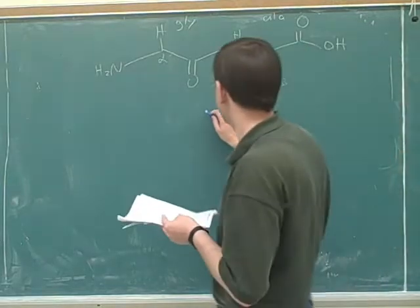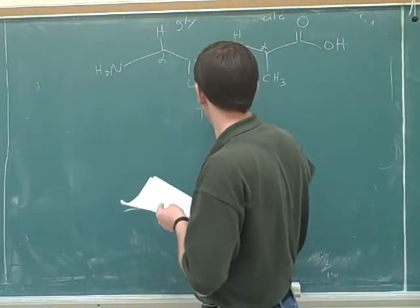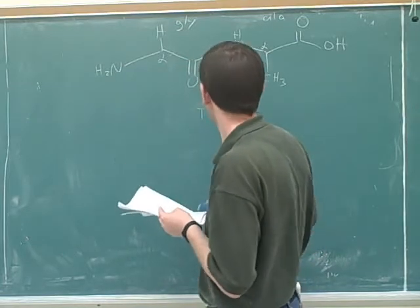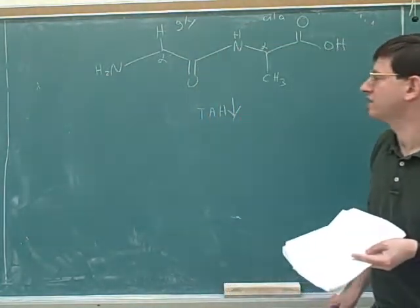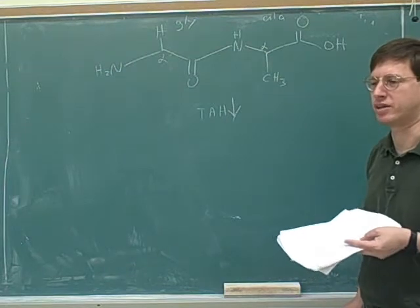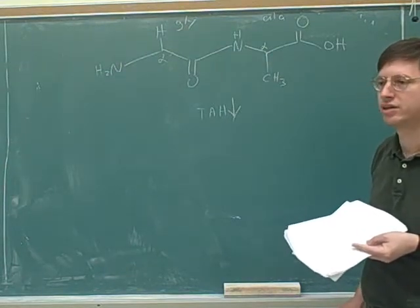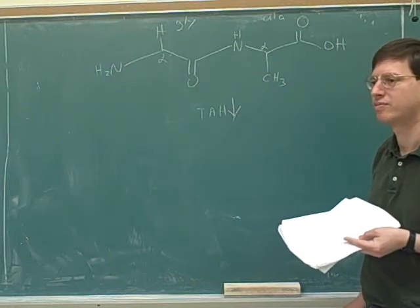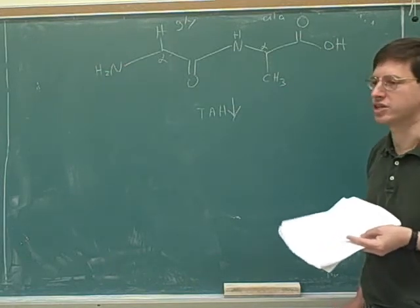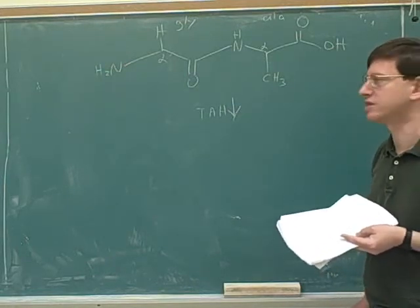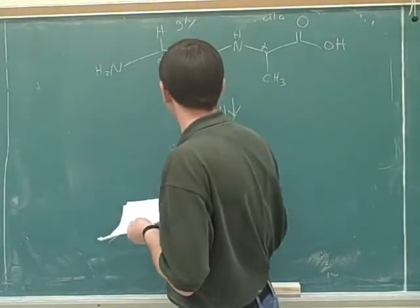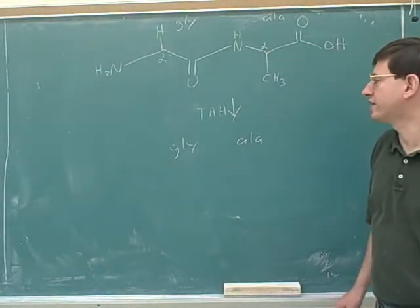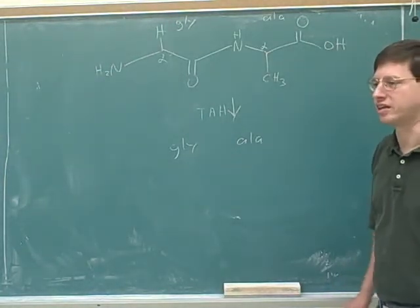So suppose we did a total acid hydrolysis on this dipeptide. What amino acids would the computer see? It would see glycine and alanine. These are not any of our problem amino acids. So now we would know for sure that our dipeptide was made out of glycine and alanine.